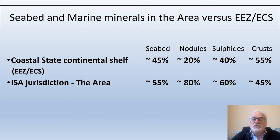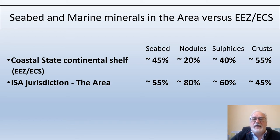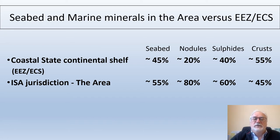The distribution of deep sea minerals is a bit different. For example, for nodules, 80 percent are situated within the area, and only 20 percent is in the exclusive economic zone and extended continental shelf. You can also see how the other two types of deep sea minerals, crusts and sulfides, are distributed.